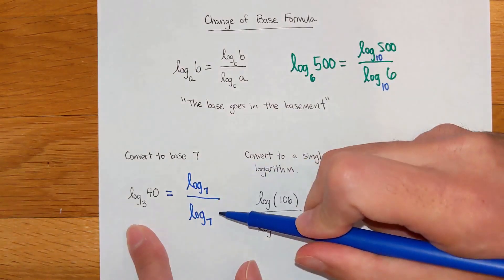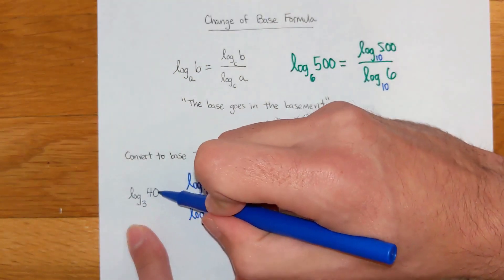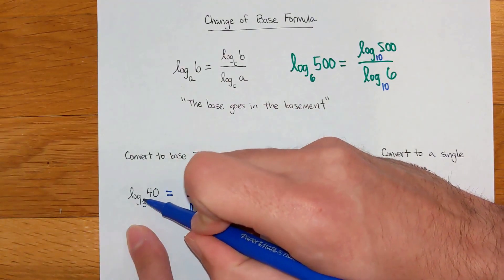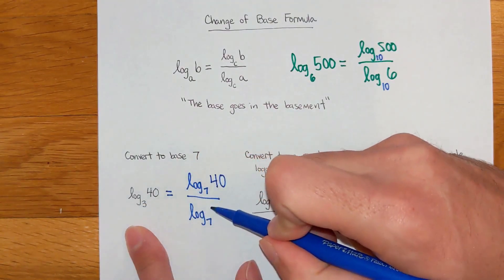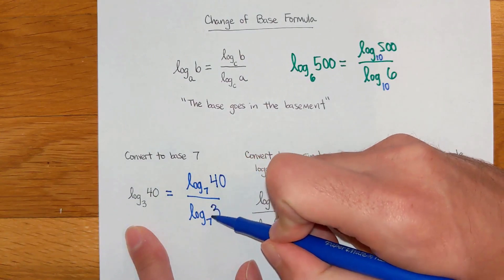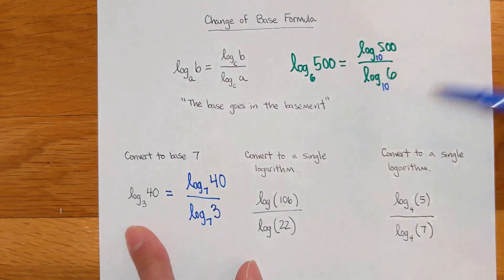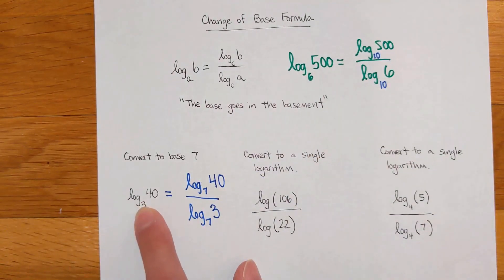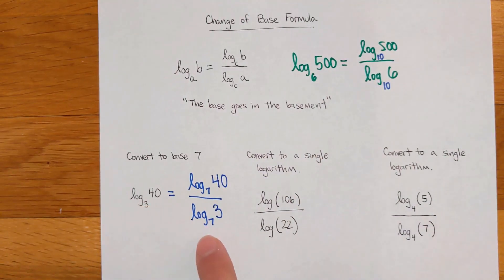But they specifically said base 7 right here. My old inside goes to the top, and my base on my original log goes to the basement, and it ends up being the inside of my denominator. This blue quantity is equal to this original one. It's just a different way of writing it that's now in base 7.